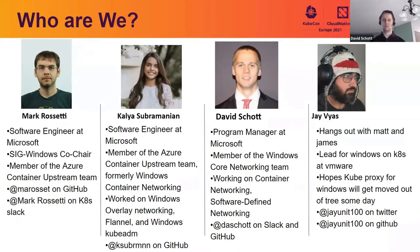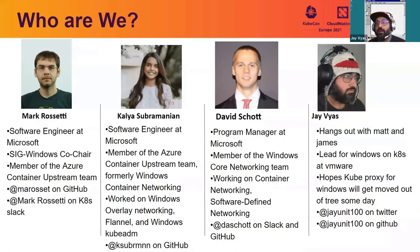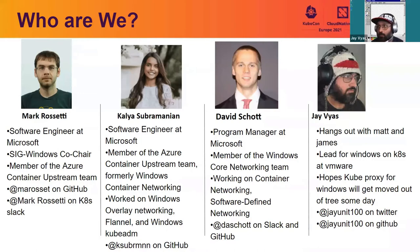Hi, everyone. My name is David Schott. I'm a PM at the Windows Core Networking team at Microsoft. I mainly work on container networking and software-defined networking. Next up is Jay. Hey, I'm Jay. I'm at VMware. I'm the tech lead for Windows on K8s. I do a lot of work in SIG Networking as well on things like network policies, and I'm JUnit100 on Twitter and GitHub.